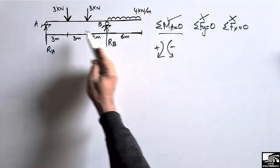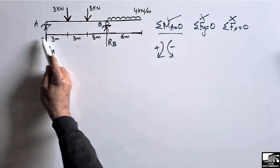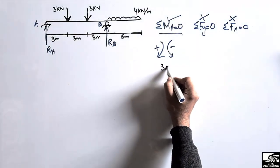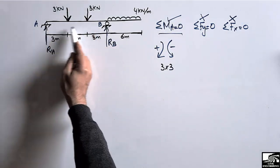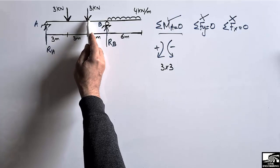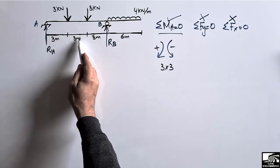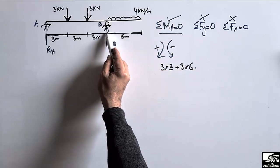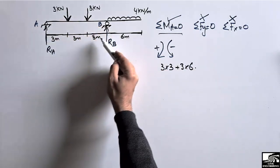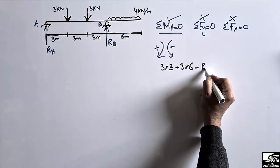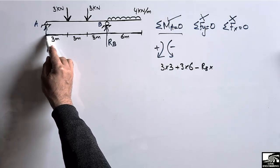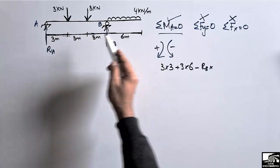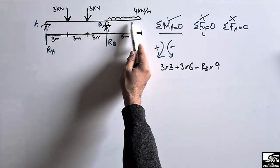Taking moments about point A: the 3 kN load creates a clockwise moment, so it is 3 × 3 = 9 kN·m (positive). The other 3 kN load also creates a clockwise moment about A, so it is 3 × 6 = 18 kN·m (positive). RB creates an anti-clockwise moment about A, so it is −RB × 9, since the total distance from RB to A is 9 meters (3 + 3 + 3).